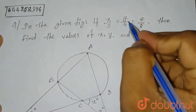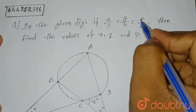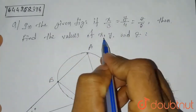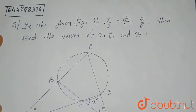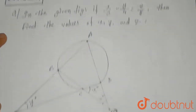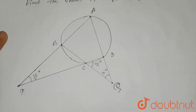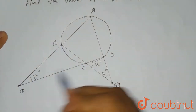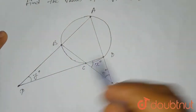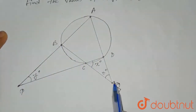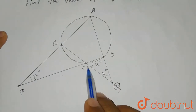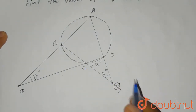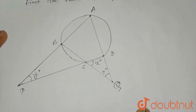The question is: in the given figure, if x/3 = y/4 = z/5, then find the values of x, y, and z. In the figure, angle BPC is y degrees, angle DCQ is x degrees, and angle CQD is z degrees.